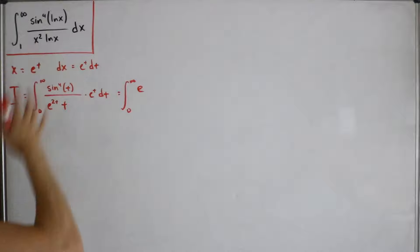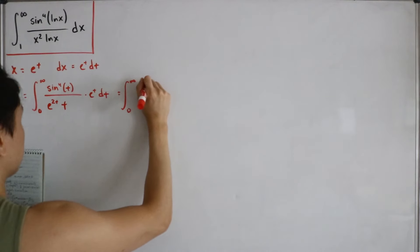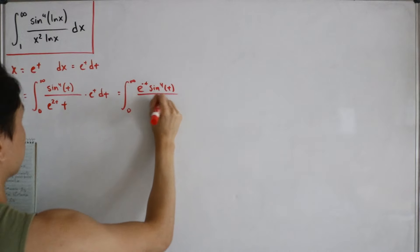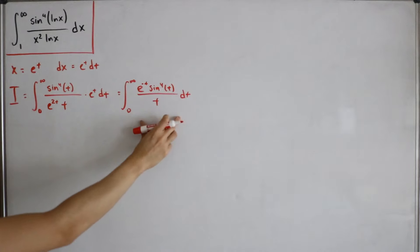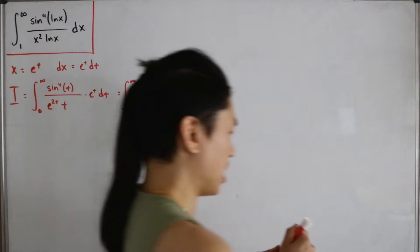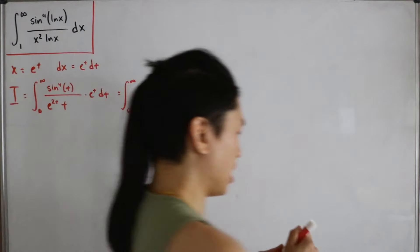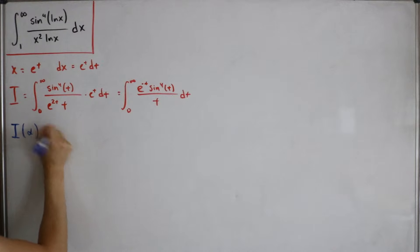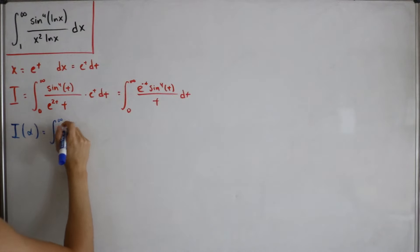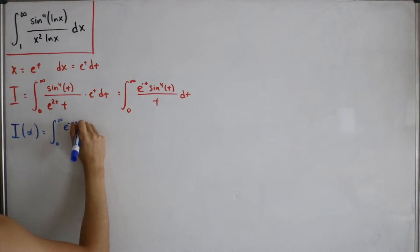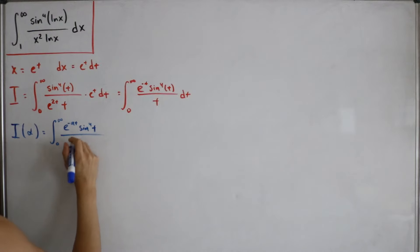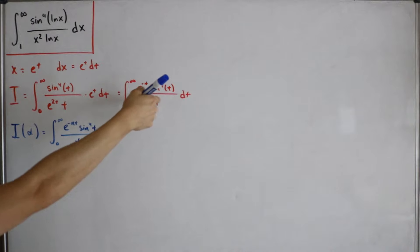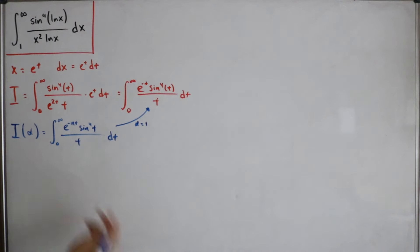After simplification we have the integral from 0 to ∞ of e^(-t) · sin⁴(t) / t dt. Now Feynman's trick comes in: define I(α) = ∫₀^∞ e^(-αt) · sin⁴(t) / t dt. Notice that plugging α = 1 gives exactly the integral we want to evaluate.